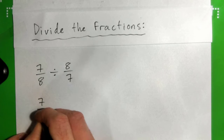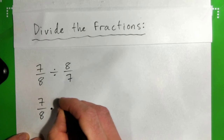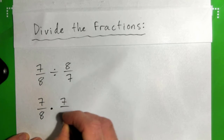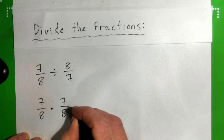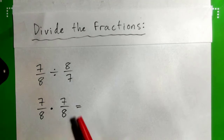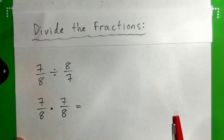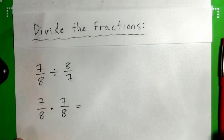So 7 eighths times 7 over 8. Can we cross-cancel anything on the top or the bottom? Nope.